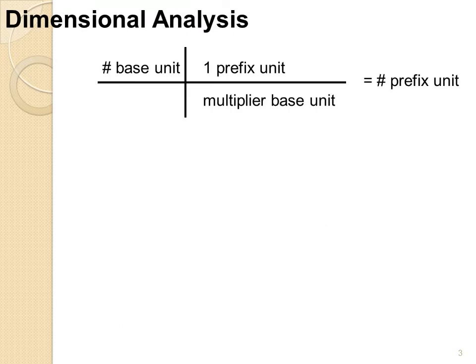First, we have the dimensional analysis method. This is fairly straightforward. Since we know the multiplier is setting up an equality between our prefix added unit and our base unit, then we can use this as a conversion factor. So we set up an equation where we have the base unit times the prefix unit that we want to use divided by the multiplier and the base unit.